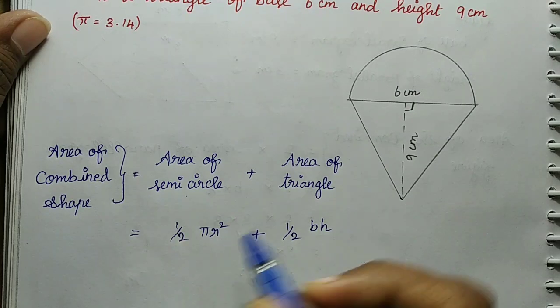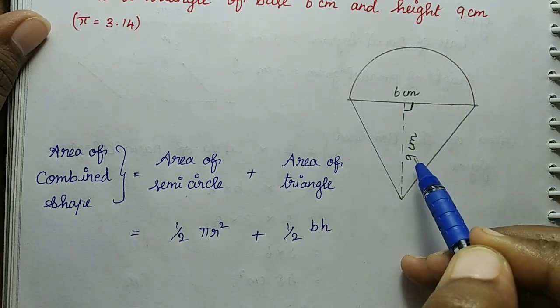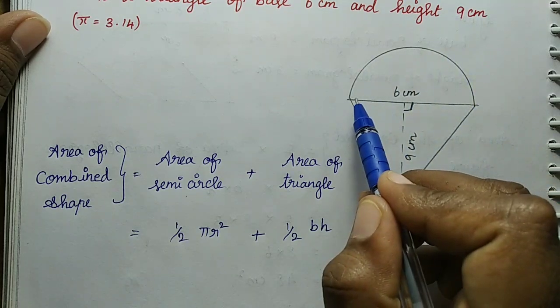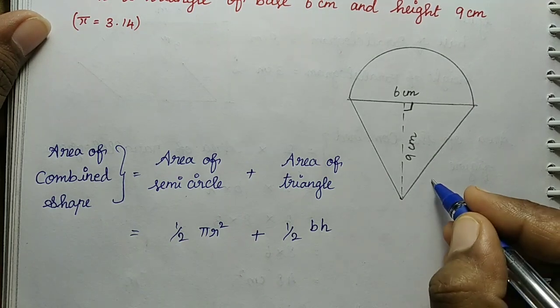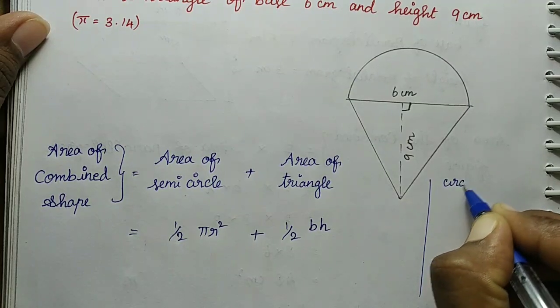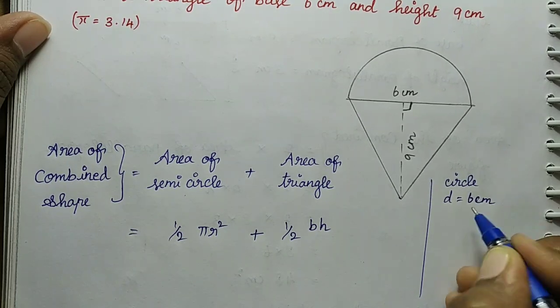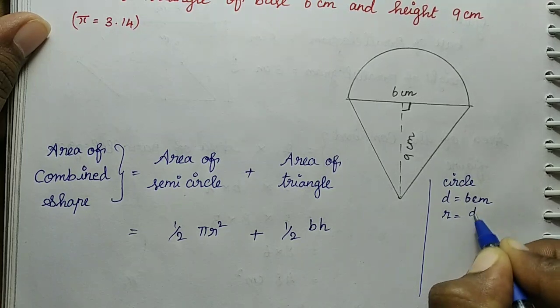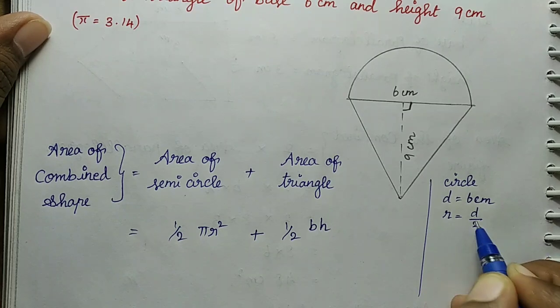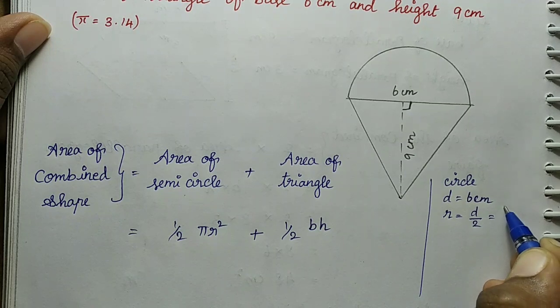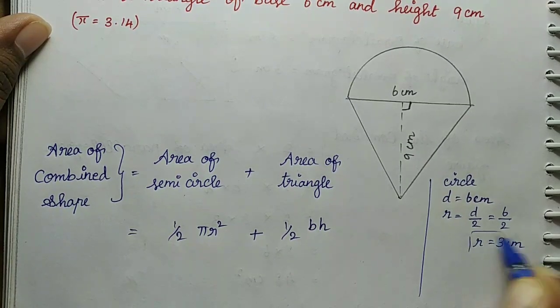Now we find the values. The semicircle and triangle are joined at this space. The diameter of the semicircle is given, but we need the radius. So diameter divided by 2: 6 divided by 2 equals 3 cm. So radius is 3 cm.